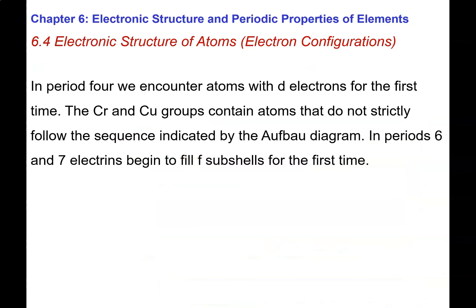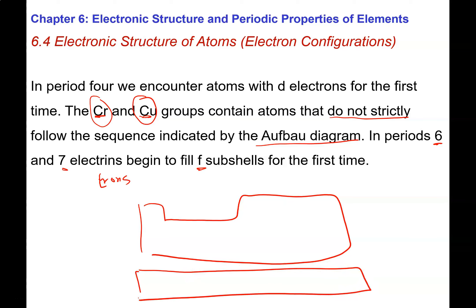What we talked about here is that in period 4, we see D electrons for the first time. There are a couple of issues with elements in the groups where we have chromium and copper at the top, and we have to keep in mind that elements in those groups do not strictly follow the sequence indicated by the Alf-Bow diagram. Once we get down to period 6 and 7, electrons begin to fill F subshells for the first time, so we have up to 14 electrons that can go in one of those subshells. The final point is if you want an alternative to the Alf-Bow diagram, you can just count your electron configuration off the periodic table.